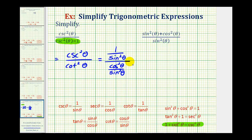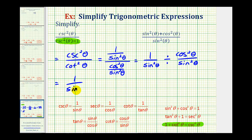Now this fraction bar represents division, so we can write this as a division problem: one over sine squared theta, divided by cosine squared theta over sine squared theta. We can rewrite this division problem as multiplication by the reciprocal of that fraction. So we have one over sine squared theta times sine squared theta over cosine squared theta. Notice how sine squared theta over sine squared theta simplifies to one.